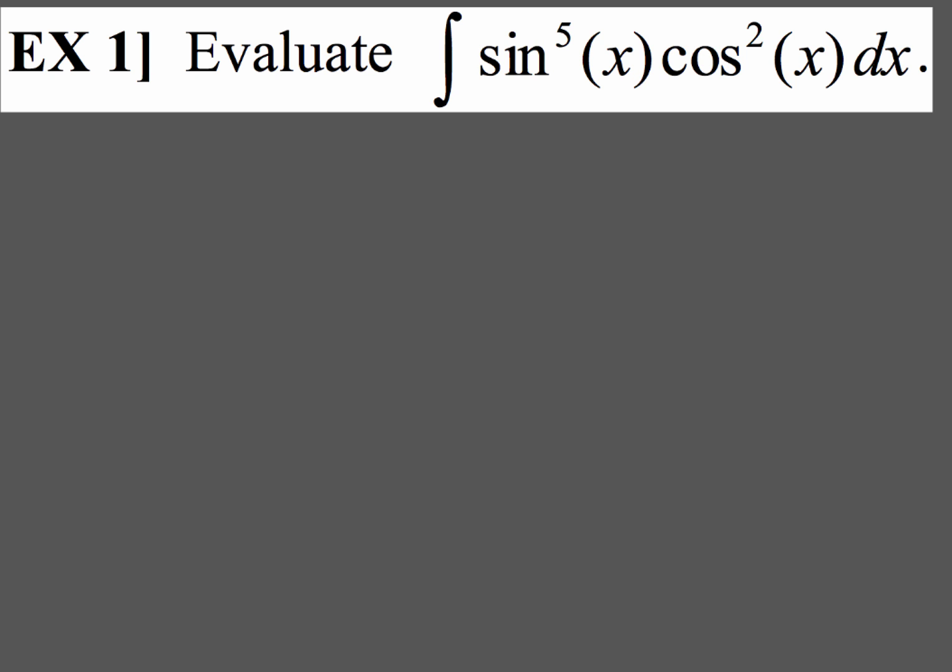So, we've got to evaluate this integral of sin to the fifth x and then cos squared x dx. Now, one of the things you want to recognize here is that sin is an odd power and cos is an even power. Anytime you have this, you're going to factor out one from the odd power ones. And sometimes people call this the odd man out rule.